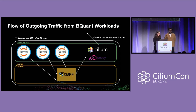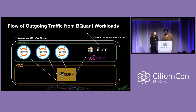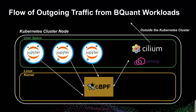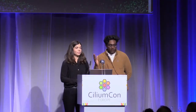I'll pass it over to Sretej to talk about the flow of outgoing traffic from our BQuant workloads. I'm a visual learner, and Anne is one too. So let's run through an example of a user running a BQuant workload. This is going to be our architecture right here. You can see the user space and the kernel space, and then you can see that Cilium is going to be deployed as a daemon set with the Cilium agent, as well as a Cilium on-byte proxy.